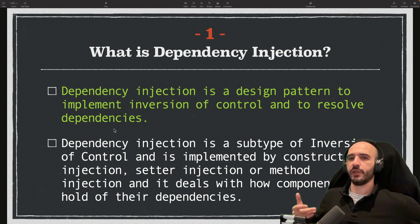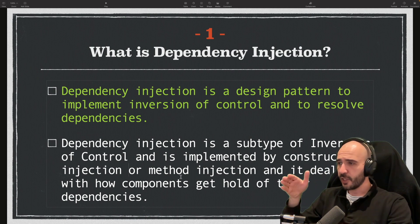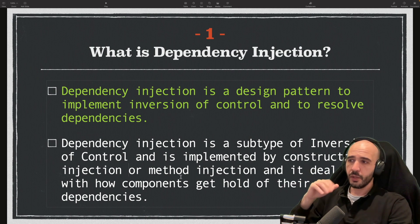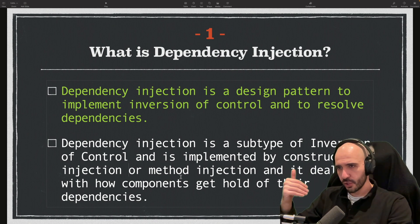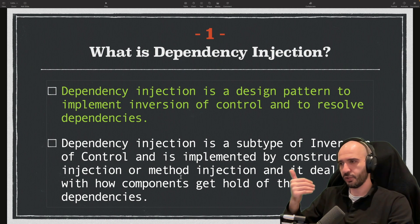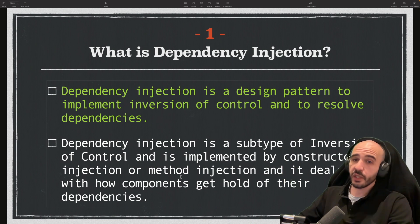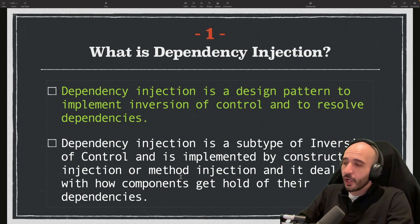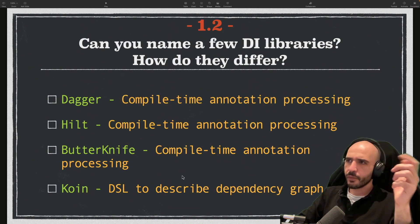The more advanced answer: dependency injection is a subtype of Inversion of Control, it's one way of doing it, and it's implemented by constructor injection or method injection. It deals with how components get hold of their dependencies. That is what dependency injection is — a very good answer that shows you're not just throwing around words without knowing what they mean.